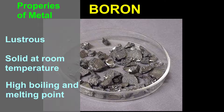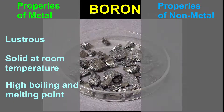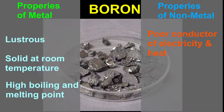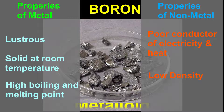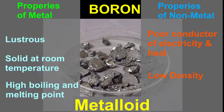On the other hand, it also showcases properties of non-metals. Similar to non-metals, it is a poor conductor of electricity and heat, and has less density. You can see that boron exhibits properties of both metals and non-metals, and thus it is categorized as a metalloid.